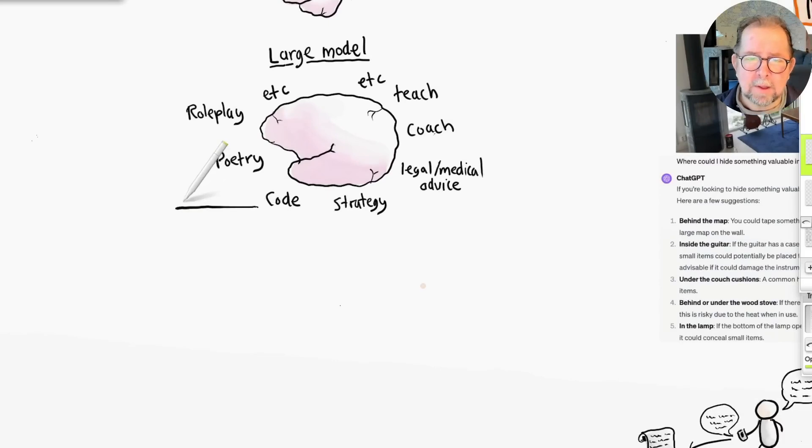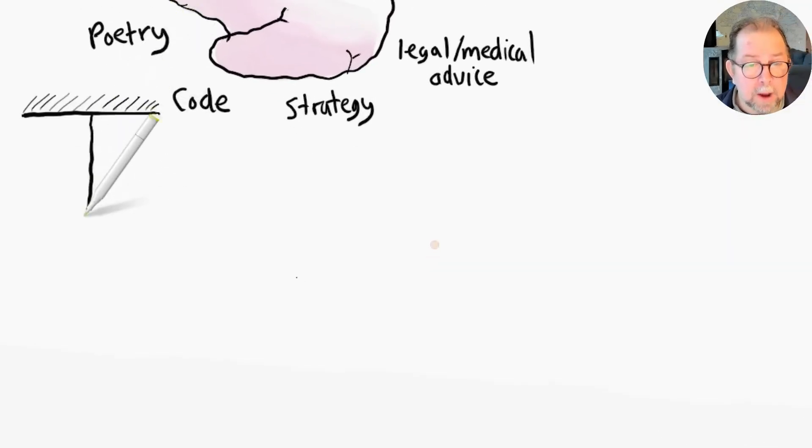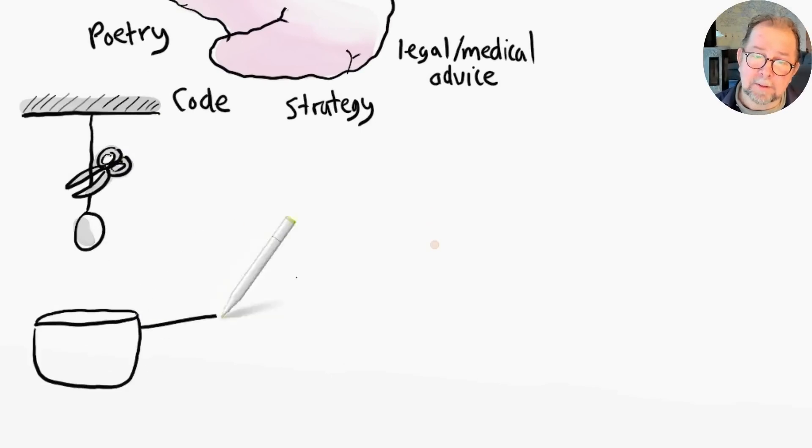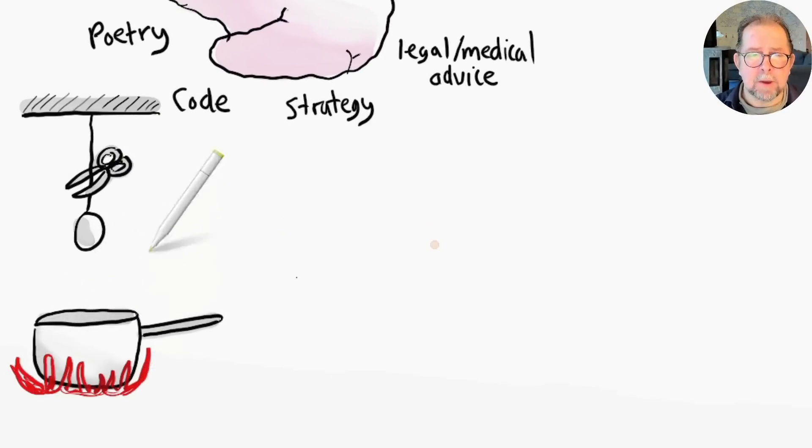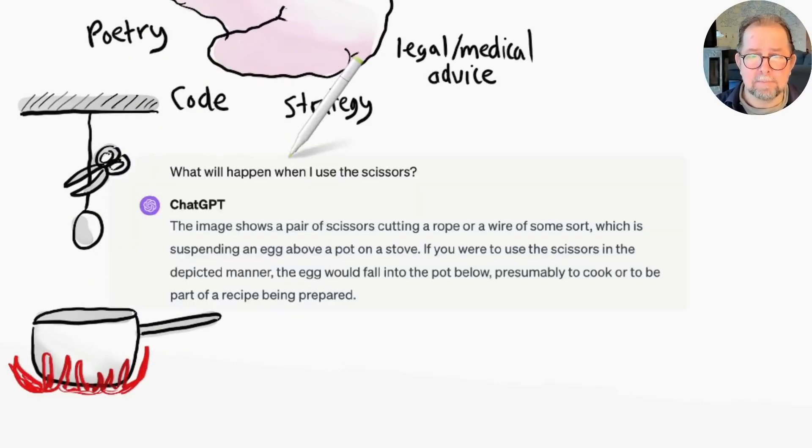I'll give GPT-4 this little drawing that involves a string, a pair of scissors, an egg, a pot, and a fire. What will happen if I use the scissors? The model has most likely not been trained on this exact scenario, yet it gave a pretty good answer, which demonstrates a basic understanding of the nature of scissors, eggs, gravity, and heat.